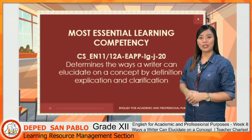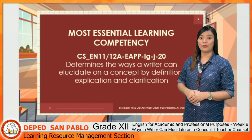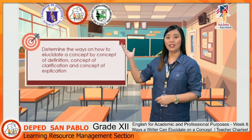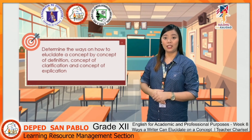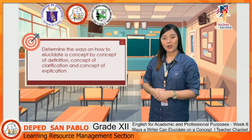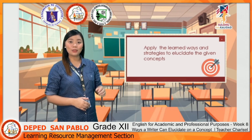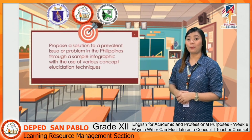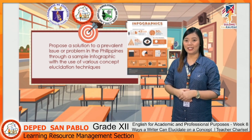Here is our most essential learning competency: Determines the ways a writer can elucidate on a concept by definition, explication, and clarification. At the end of the video lesson, you are expected to determine the ways on how a writer can elucidate on a concept by definition, clarification, and explication; apply learned ways and strategies; and propose a solution to a prevalent issue or problem in the Philippines through a sample infographic using various concept elucidation techniques.